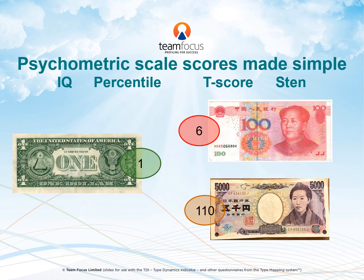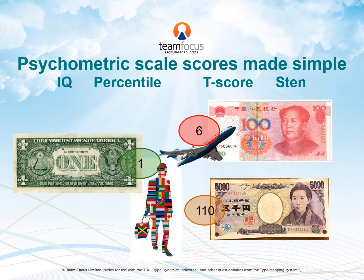In the same way, an IQ of 115 may be the same as a percentile of 84, or a T-score of 60. And if you've never heard of some of these scales, by the end of this video you will know the principles on which they are based. In learning to use psychometrics, you need to become a world traveler and understand the various psychometric currencies.